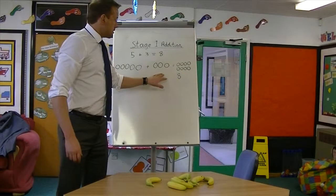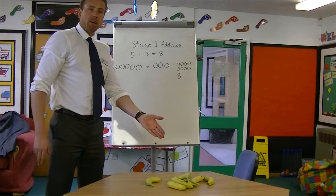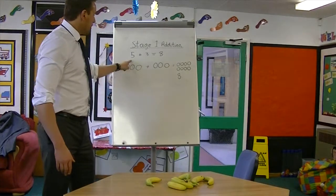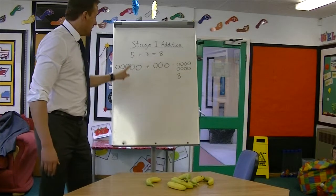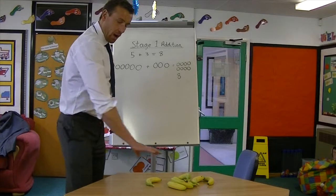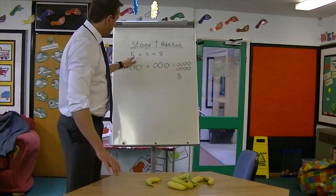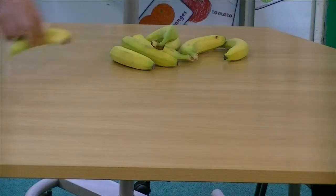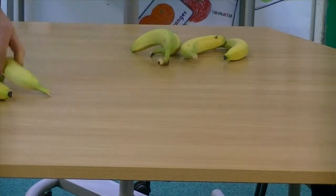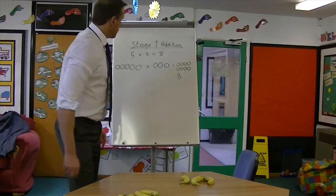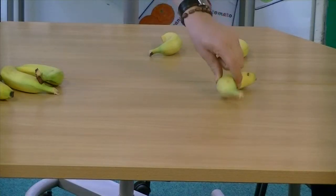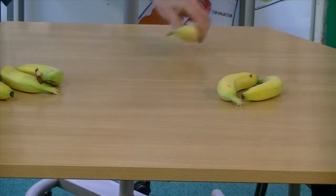So we've used drawings. Real objects — real maths, anything to hand. We've got a bunch of bananas. So if the number sentence is 5 add 3, you'd encourage your child to count away from the pile the first number — 5: 1, 2, 3, 4, 5. And then the second number in a separate pile: 1, 2, 3.